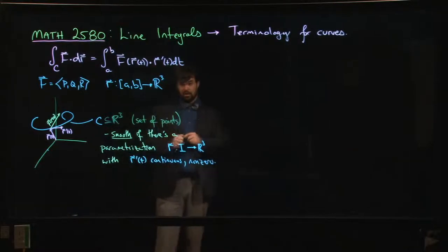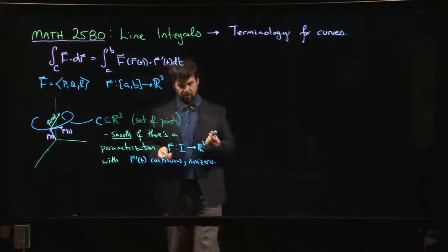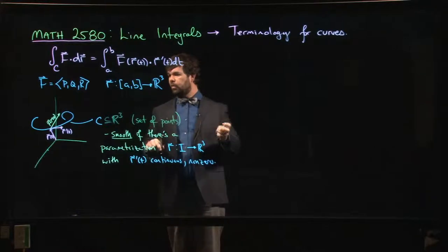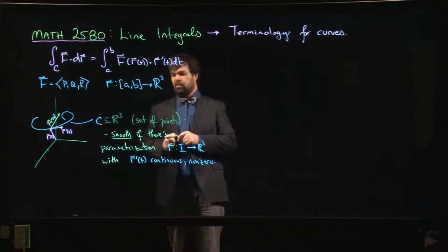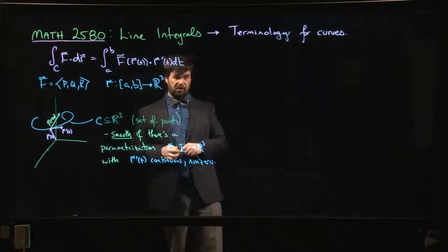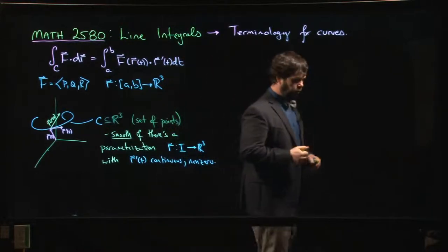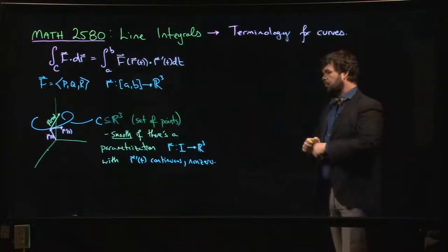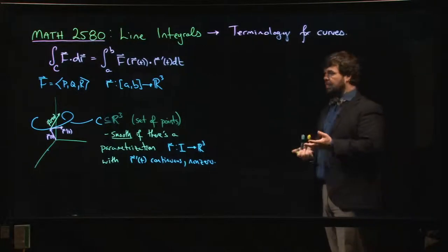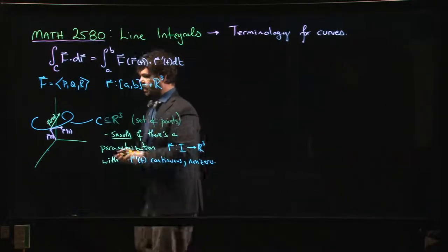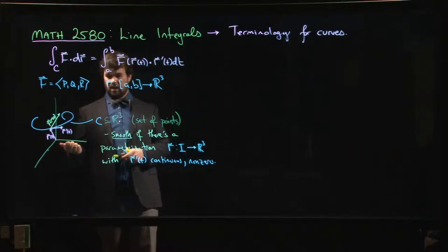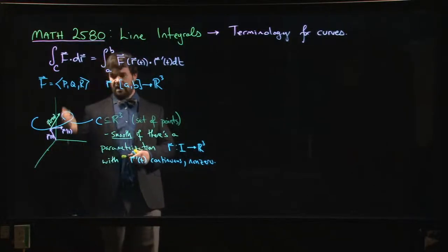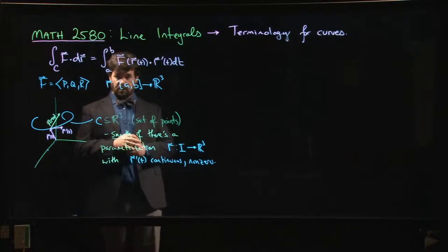Those are the conditions that we have to meet to have a smooth curve. So if you have a particular curve, it might admit parametrizations that are smooth and parametrizations that are not smooth. But as long as there's at least one smooth parametrization, we would say it's a smooth curve. If the curve is not smooth—if it has bends or kinks or breaks or anything like that in the curve—then you're not going to be able to find such a parametrization.